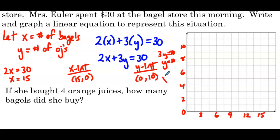Okay, so the y-axis, that's the number of OJs. And the x-axis is the number of bagels. Okay, so plot our two points. So 15, 0, 0, 10. We've done this before just using the intercepts. And we'll connect those two points to get our graph.